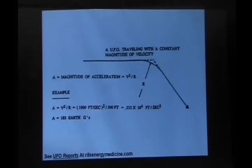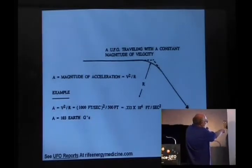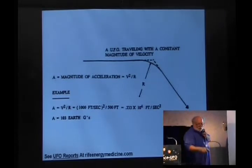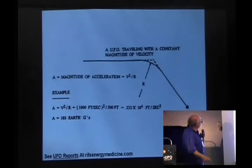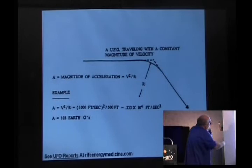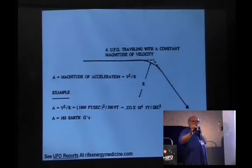Here I have the path of some UFO that decided it was no longer going to go one direction — it was going to go someplace else and just did it. In a very short distance, with a curvature radius of 500 feet and a velocity of 1,000 miles an hour — just a little below the speed of sound — it does this little turn. You can put those numbers into the standard acceleration formula for a turn and you come up with 103 Earth Gs. We cannot survive 103 Earth Gs; it really deforms us.